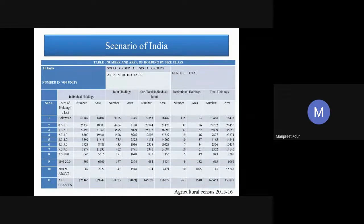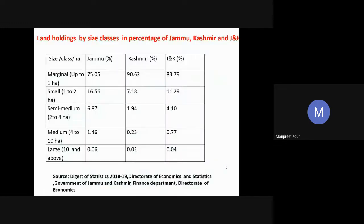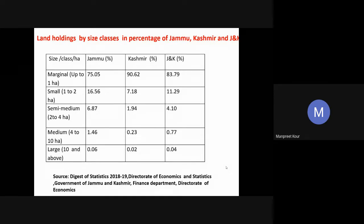This table tells us about the 2015–16 detailed census where operational holding sizes are decreasing. The next table covers the land holding size of Jammu & Kashmir, where it has been seen that the proportion of marginal farmers is 83%, followed by small, then semi-medium farmers. This is the scenario.